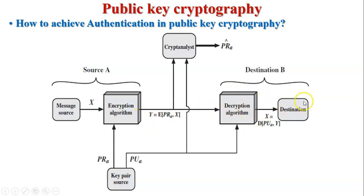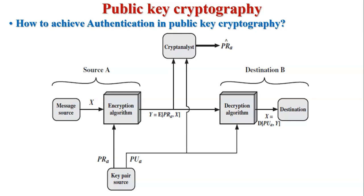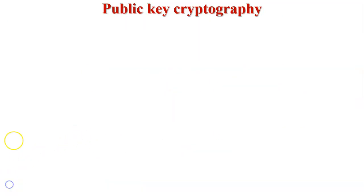The decryption algorithm is used at the receiver side. The input to the decryption algorithm is ciphertext Y and the public key of A. All users on the network who have the public key of A can decrypt that data. The destination decrypts the data using the public key of A. As per the definition of authentication, the receiver can receive the data and check whether the data was sent by the original sender or not. Using this figure, we can achieve authentication in public key cryptography.